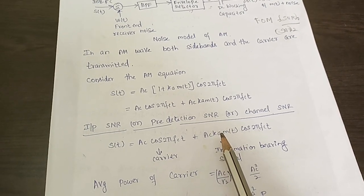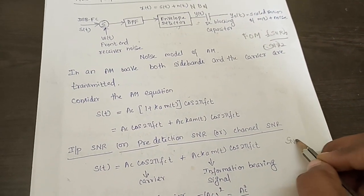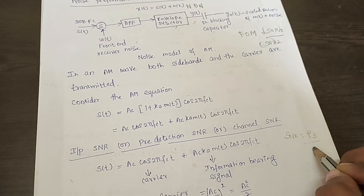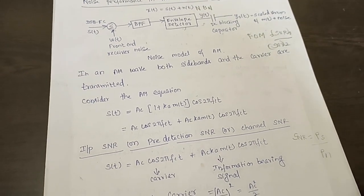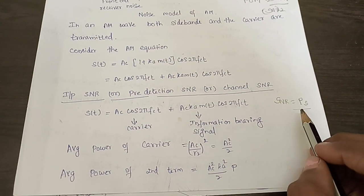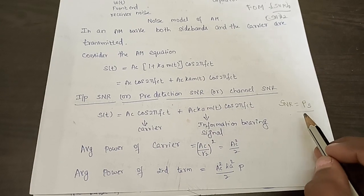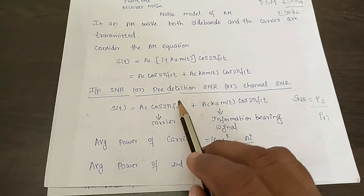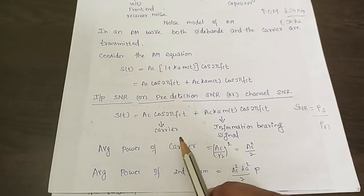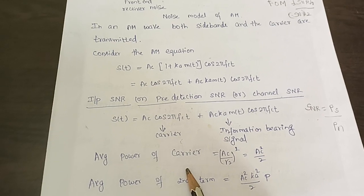Now we have to find the signal to noise ratio at the input, which is also called pre-detection SNR or channel SNR. It is called pre-detection because we are finding the SNR before feeding the signal as input to the receiver. The input is DSBFC with two terms: the carrier term and the information-bearing component. Signal to noise ratio is the ratio of signal power to noise power. Our first aim is to find the signal power at the input.